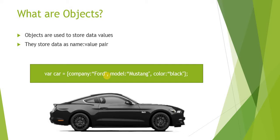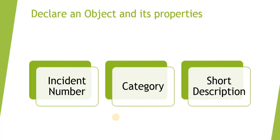If you want to store values of an object, for example this car, this is how you can have the properties and values of that particular object. Similarly, you can store properties and values of an incident, a change record, or anything else.